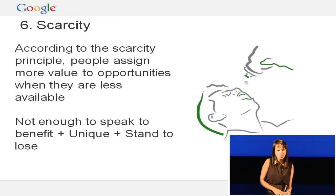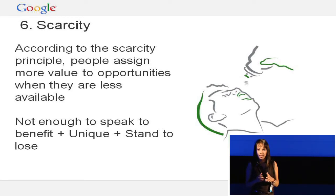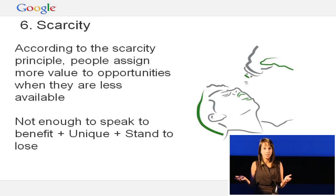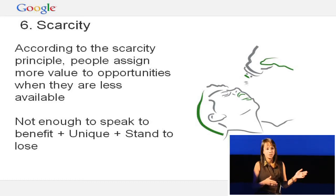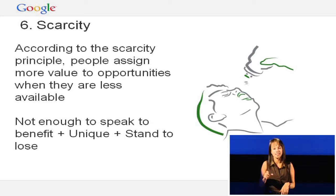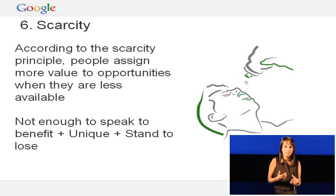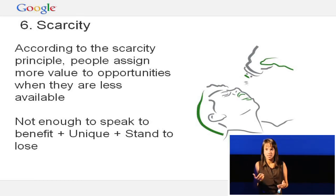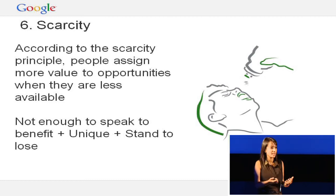The sixth and final principle is scarcity. We assign greater value to things that are in short supply. Think of a practical example: the night before petrol prices increase, you see long queues at petrol stations — it doesn't mean people won't find fuel the next day, just not at the same price. So it's very important to speak to the benefit, but also to speak to how your solution and product is unique, and what the client actually stands to lose if they do not sign up with you.